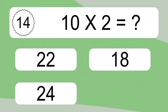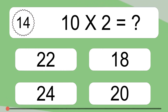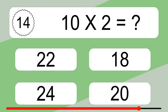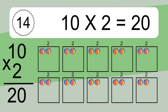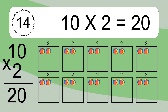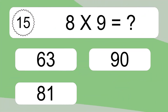10 times 2 equals what? 10 times 2 equals 20. We have 10 boxes, and each box has 2 colorful balls inside. If you count all the balls in all the boxes together, you will have 10 times 2 balls. This equals 20 balls.